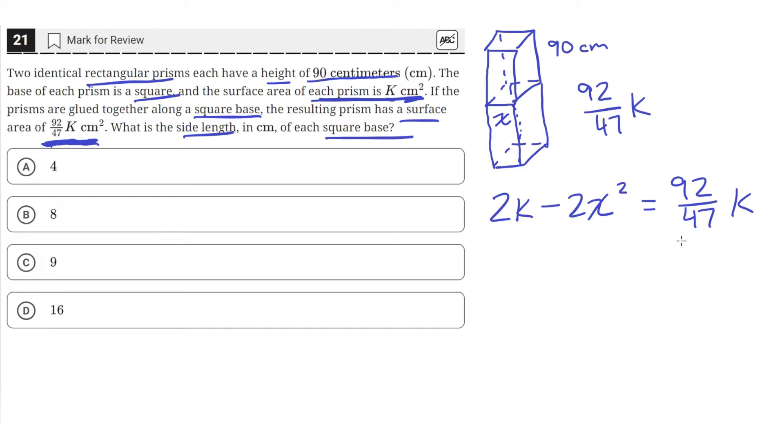Let's move this 92 over 47 k to the other side by subtracting it from both sides. So 2 minus 92 over 47, if you put that in your calculator, is just equal to 2 over 47 k.